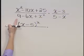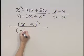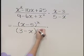The denominator as well is a perfect square trinomial, and it factors as 3 minus x quantity squared.